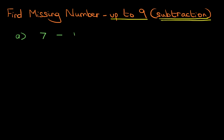The first one is 7 minus something equals 3, and the second example is something minus 4 equals 2.